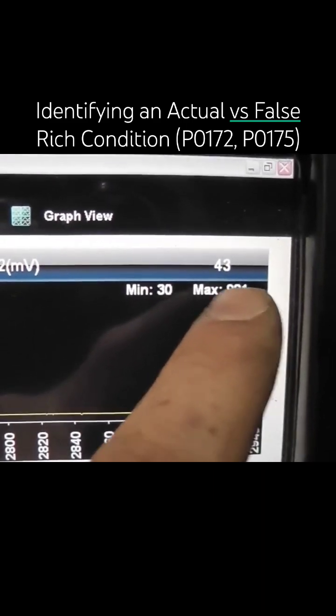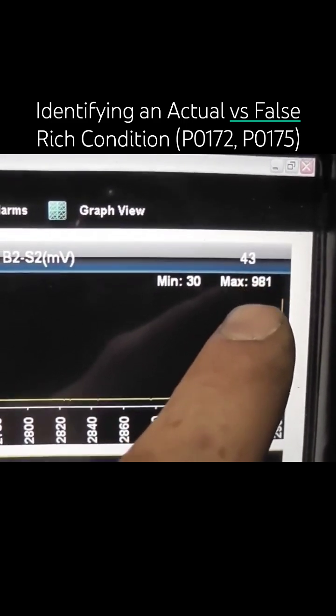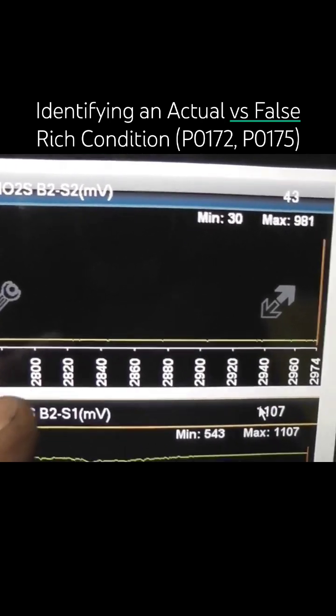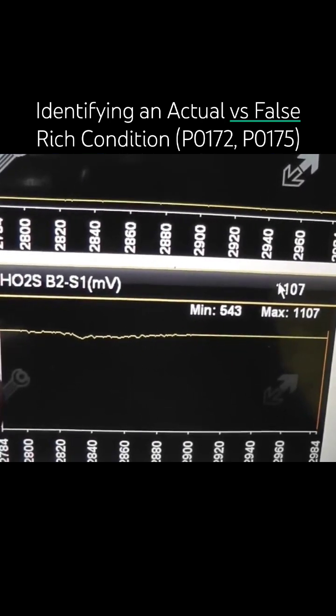You see the downstream sensor's reporting basically zero volts, 43 millivolts to be exact. So downstream sensor's reporting lean, the upstream sensor's reporting rich.